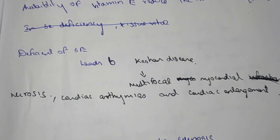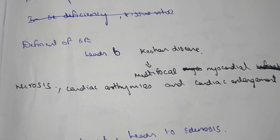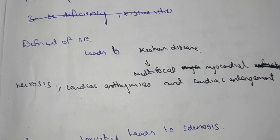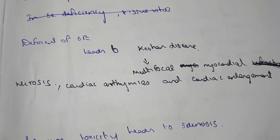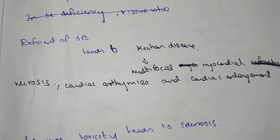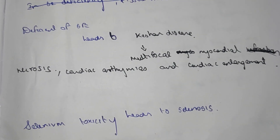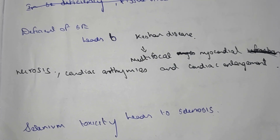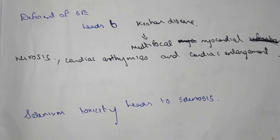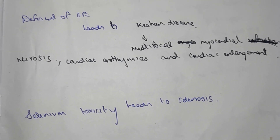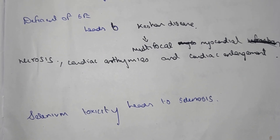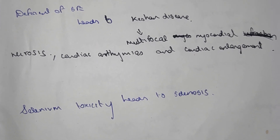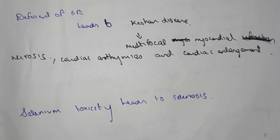Availability of vitamin E reduces the selenium requirement. Selenium deficiency leads to Keshan's disease, characterized by multiple focal myocardial necrosis, cardiac arrhythmia, and cardiac enlargement. Excess selenium in the body leads to toxicity known as selenosis.